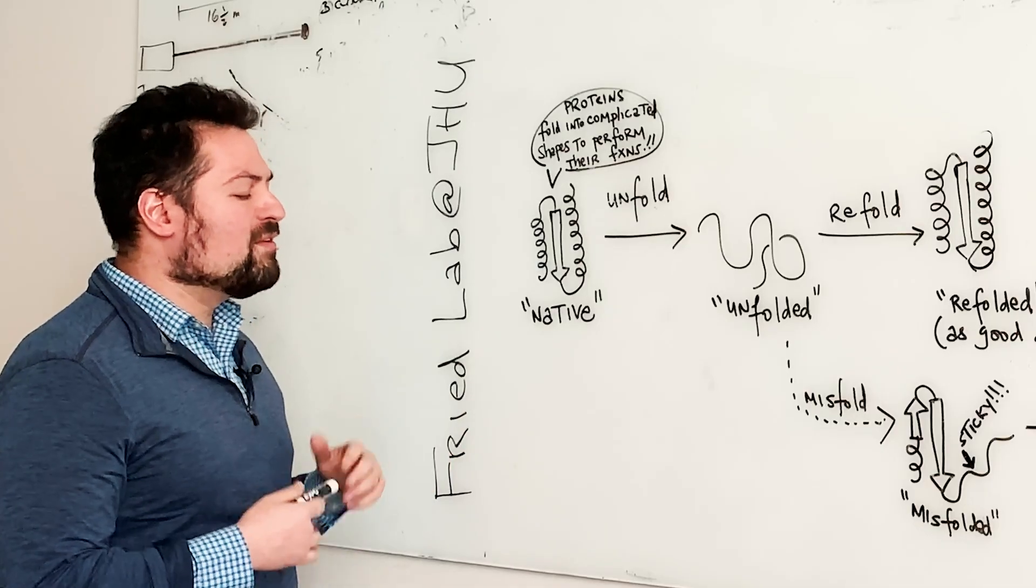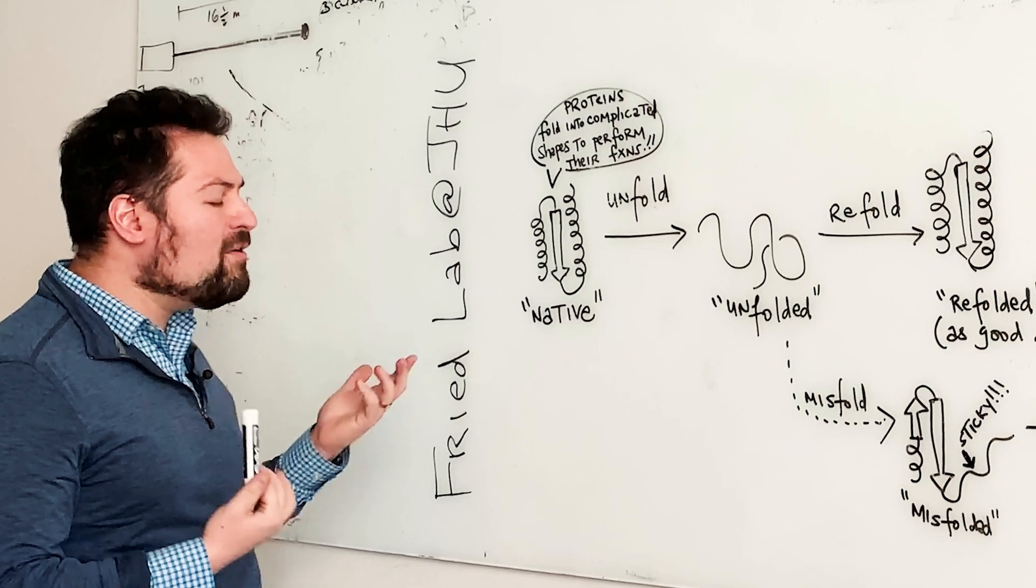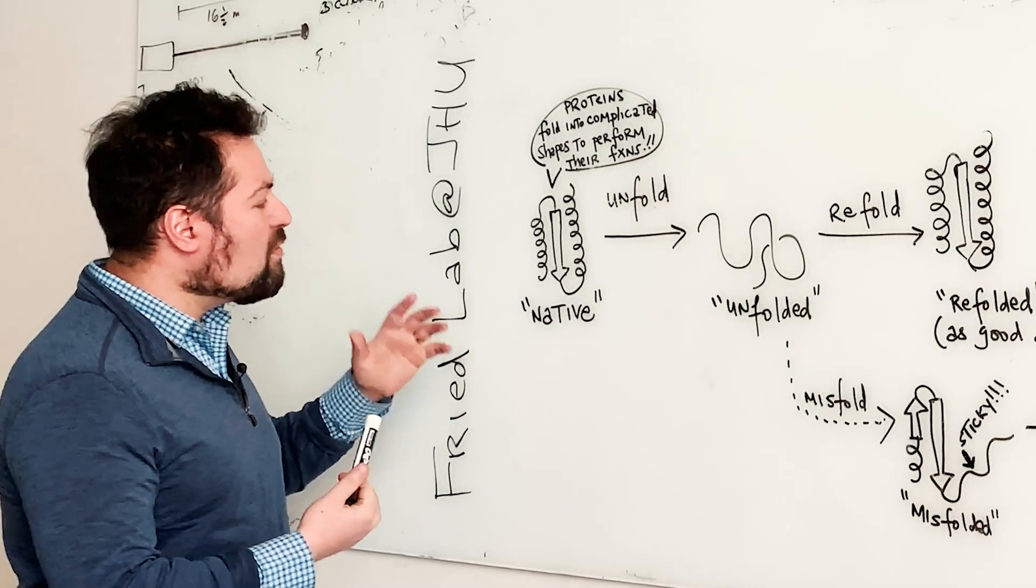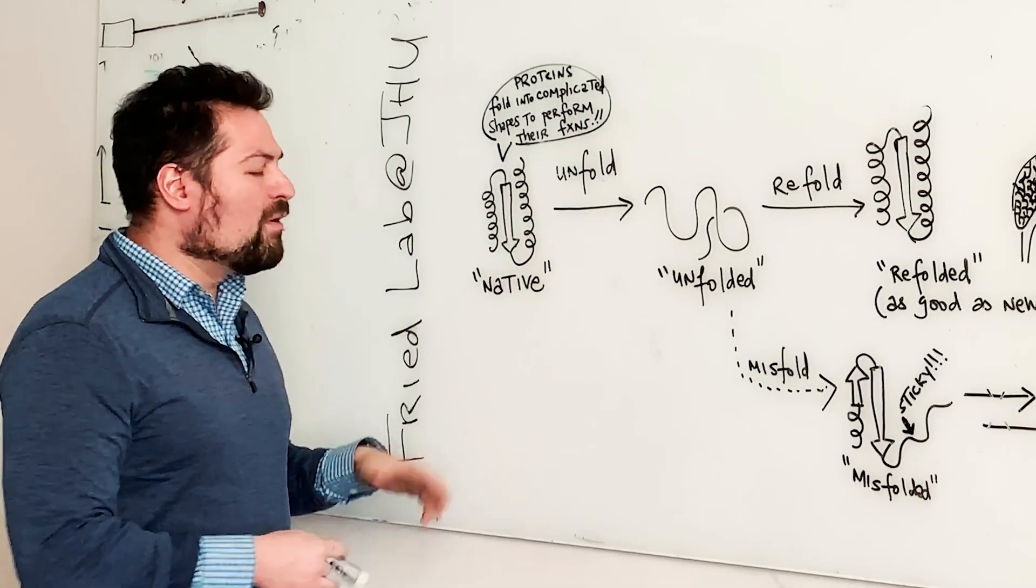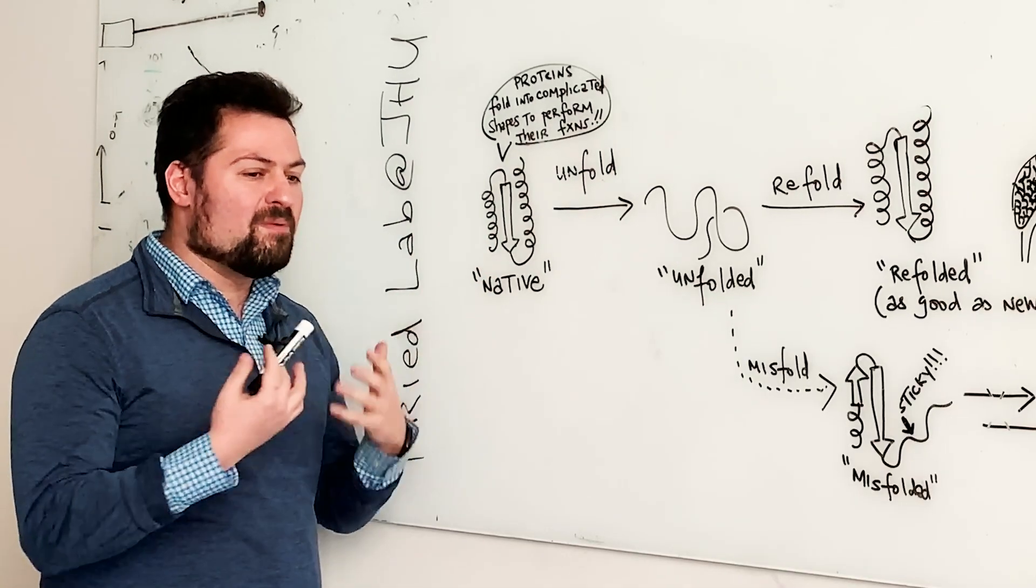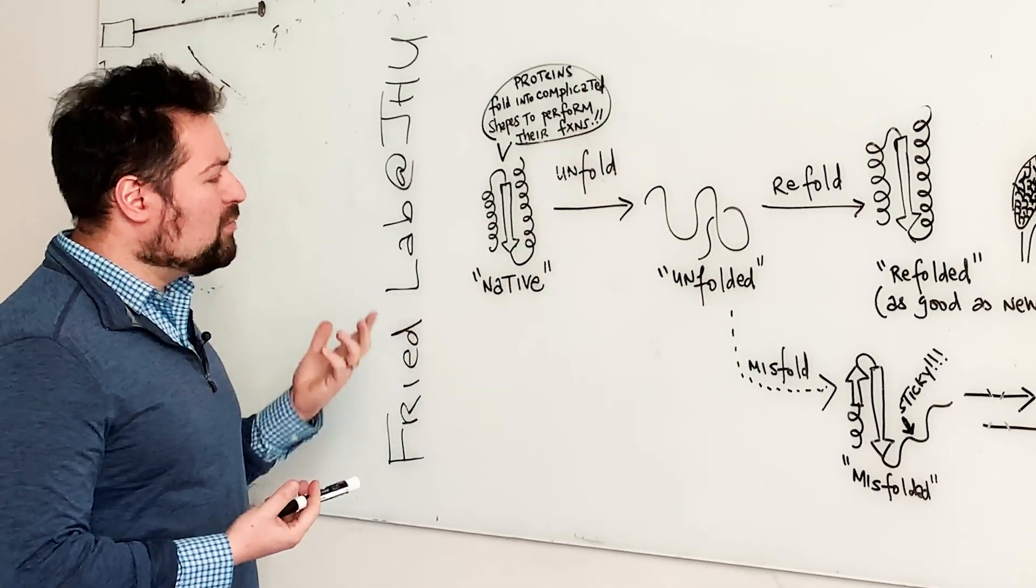But biochemists have long been interested in asking, how is it that proteins are so good at folding into such a specific conformation when there are millions and billions of other possible shapes that the molecule could exist in?